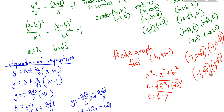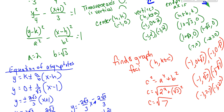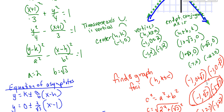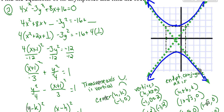Now finding the foci: C² = A² + B² = 4 + 3 = 7, so C = √7 ≈ 2.7. Since the transverse axis is vertical, foci are at (H, K ± C) = (-1, 0 ± √7) = (-1, √7) and (-1, -√7). We plot focus 1 at (-1, 2.7) and focus 2 at (-1, -2.7).